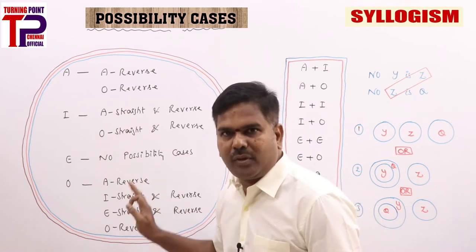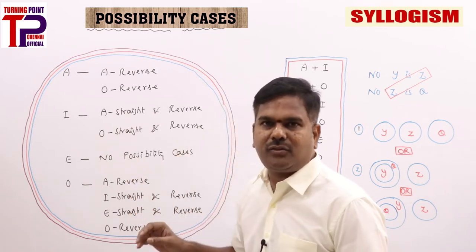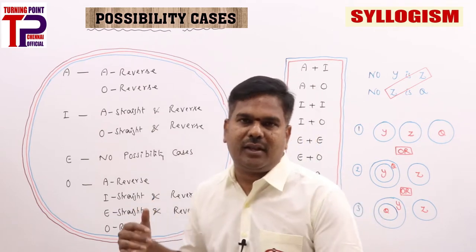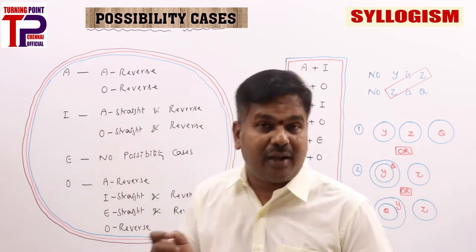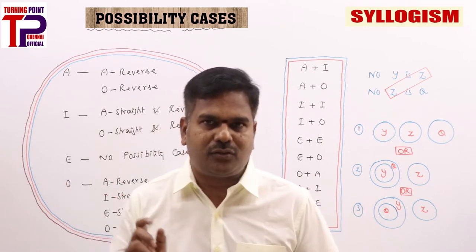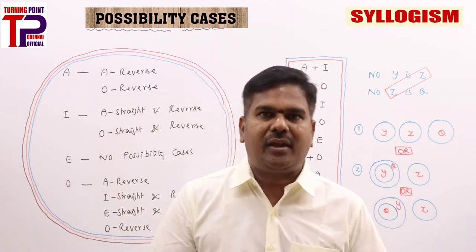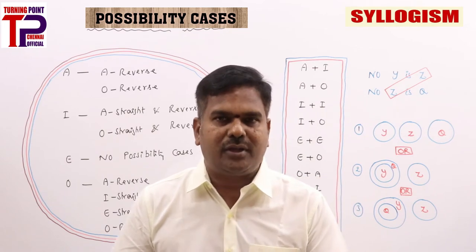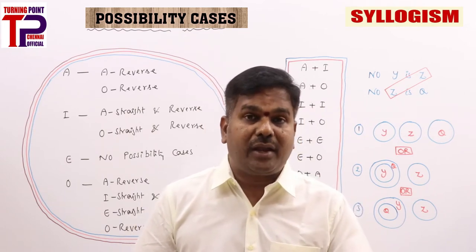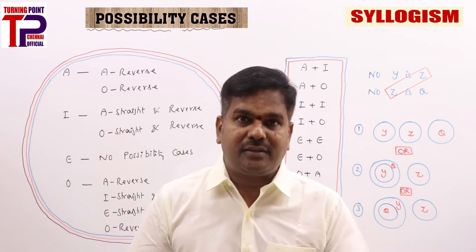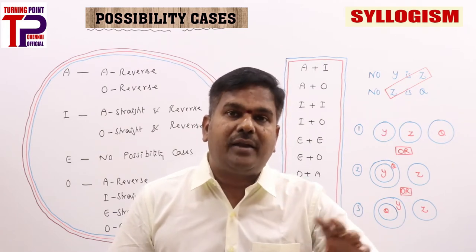Hope you can easily recap this. I made it as a summary for convenience. In addition to this, we have some more rules to remember. For E there are no possibilities, and whenever we are getting A plus I or I plus I conditions, they won't fall under the six rules.